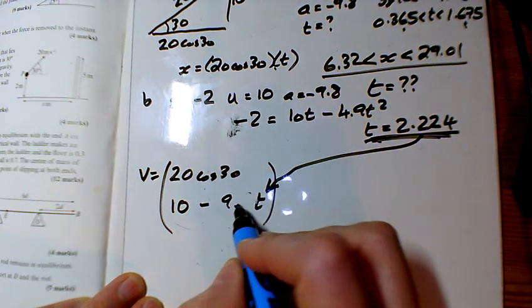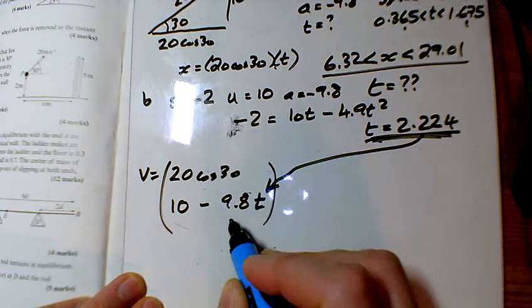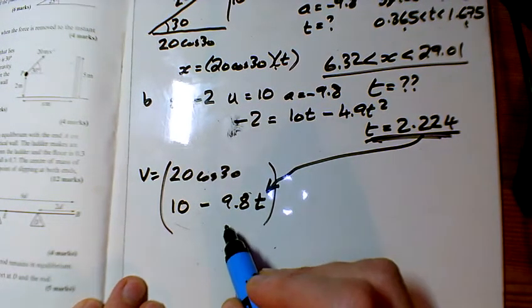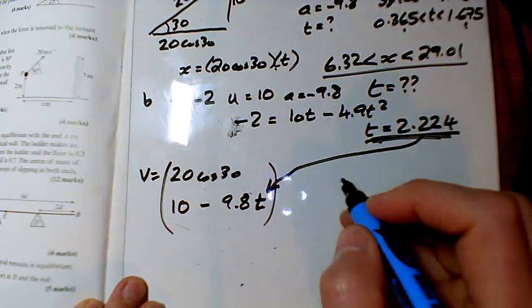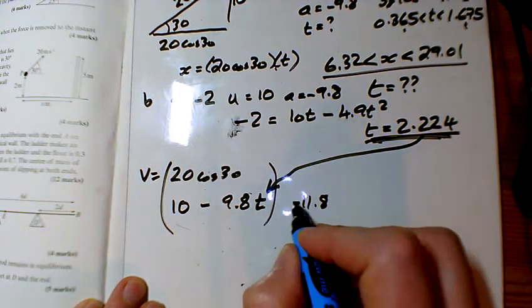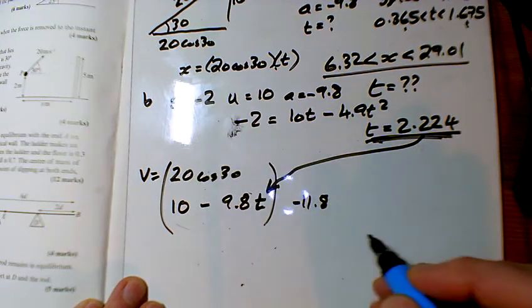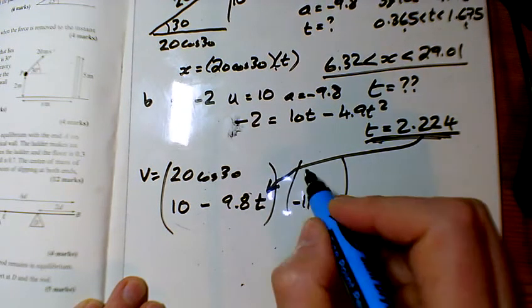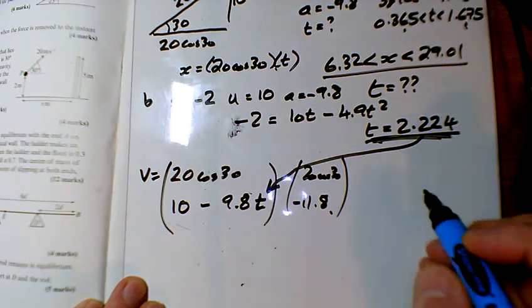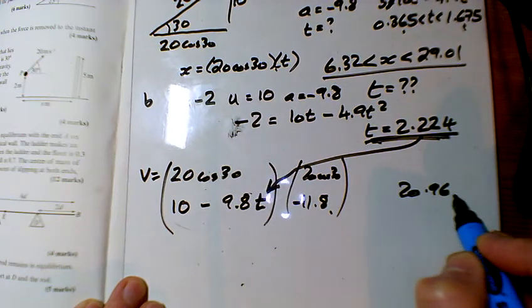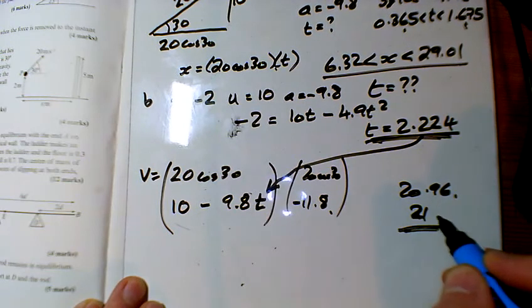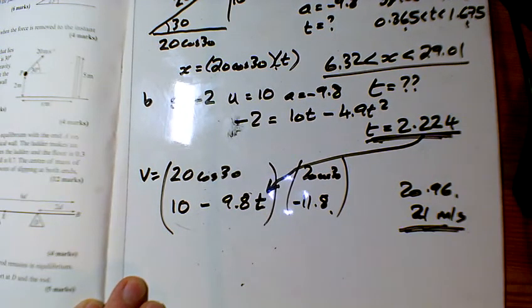10 minus 9.8 t. V equals u plus a t, sorry. I've been going for three minutes, I don't want to redo it. Put that in there. I'm getting 11.8 minus 11.8 for that bit there. And so if I now Pythagoras that, this squared add this squared square rooted, I'm getting 20.96, so I'll round that to 21 meters per second for my speed.